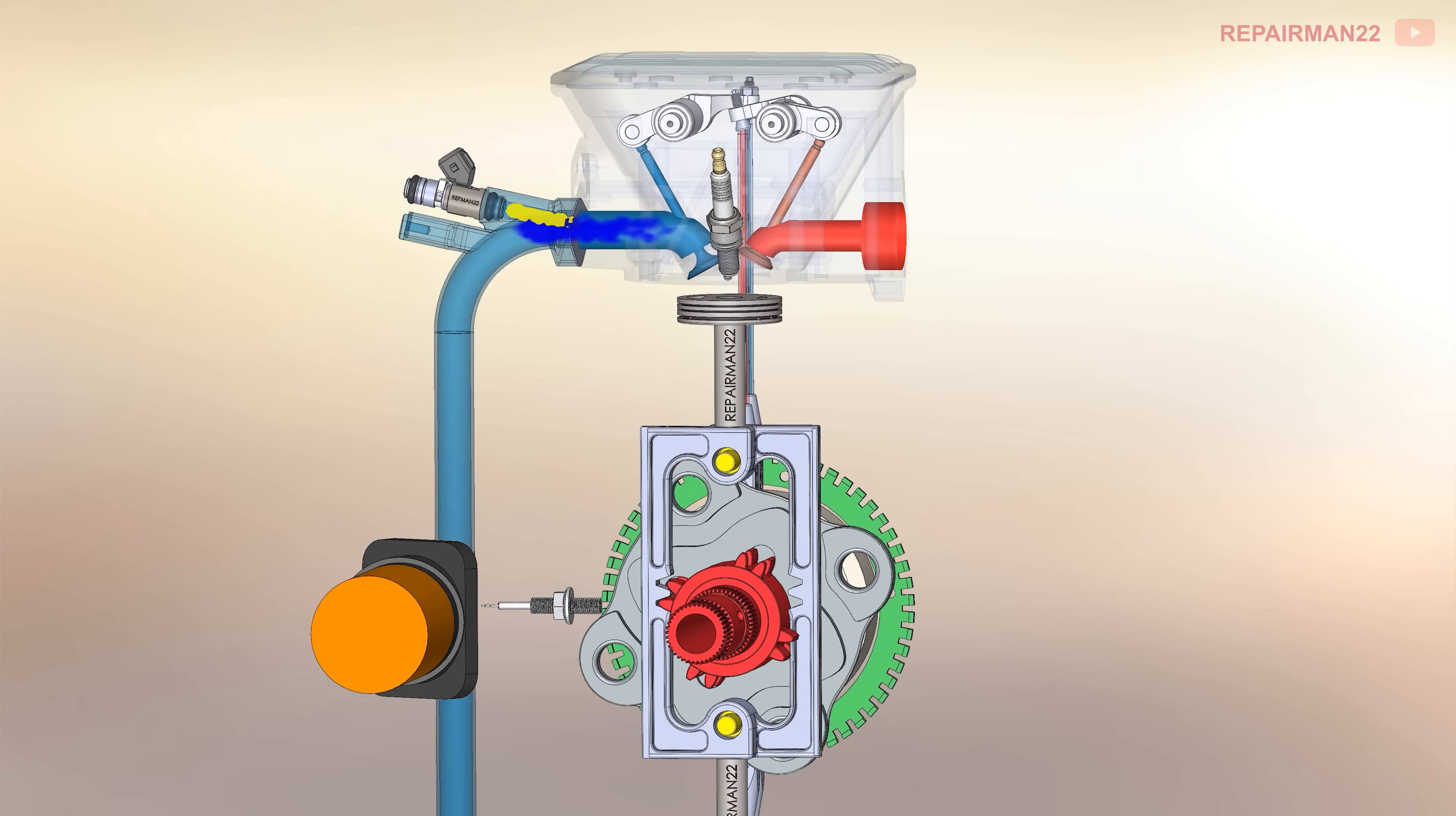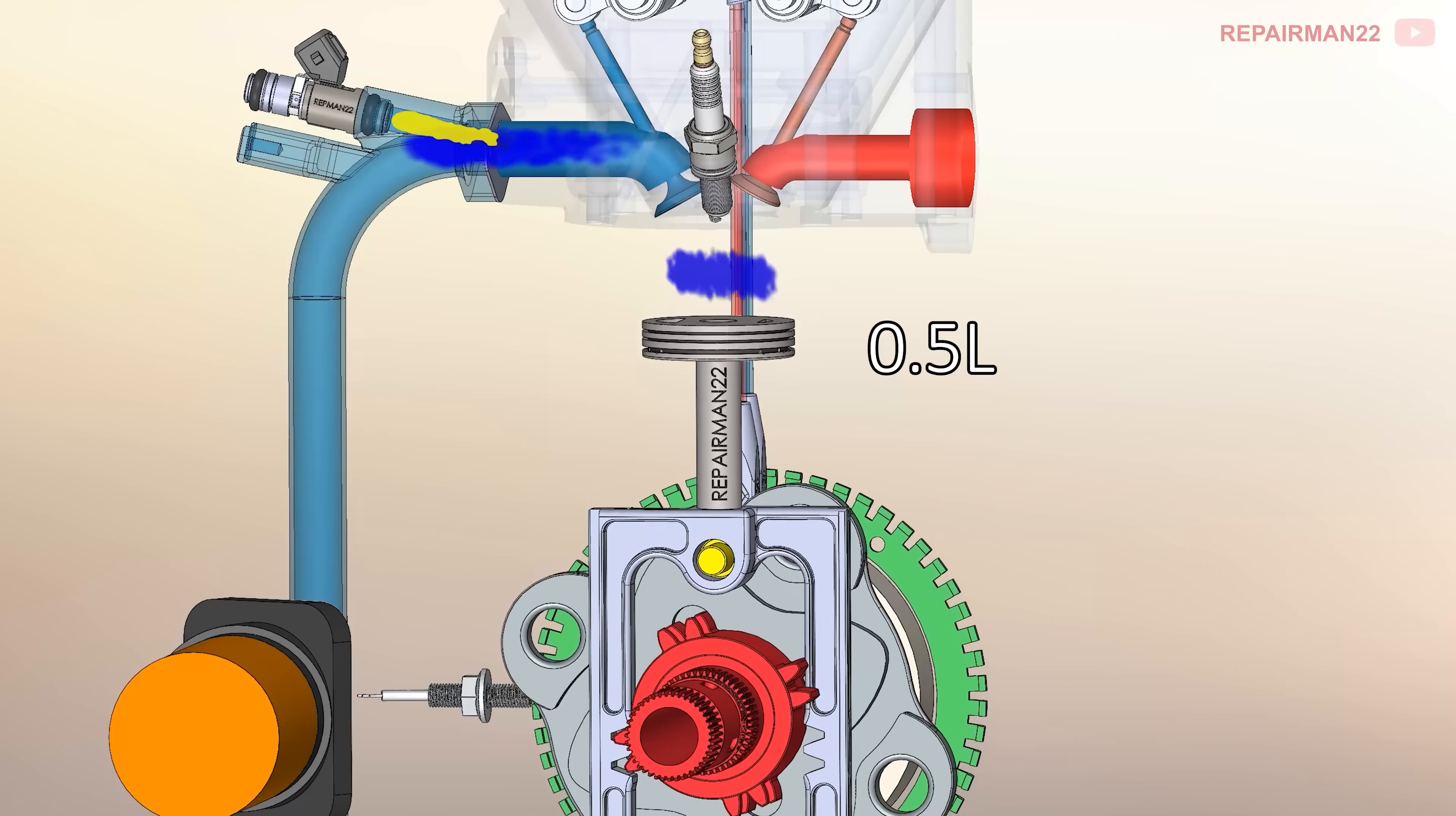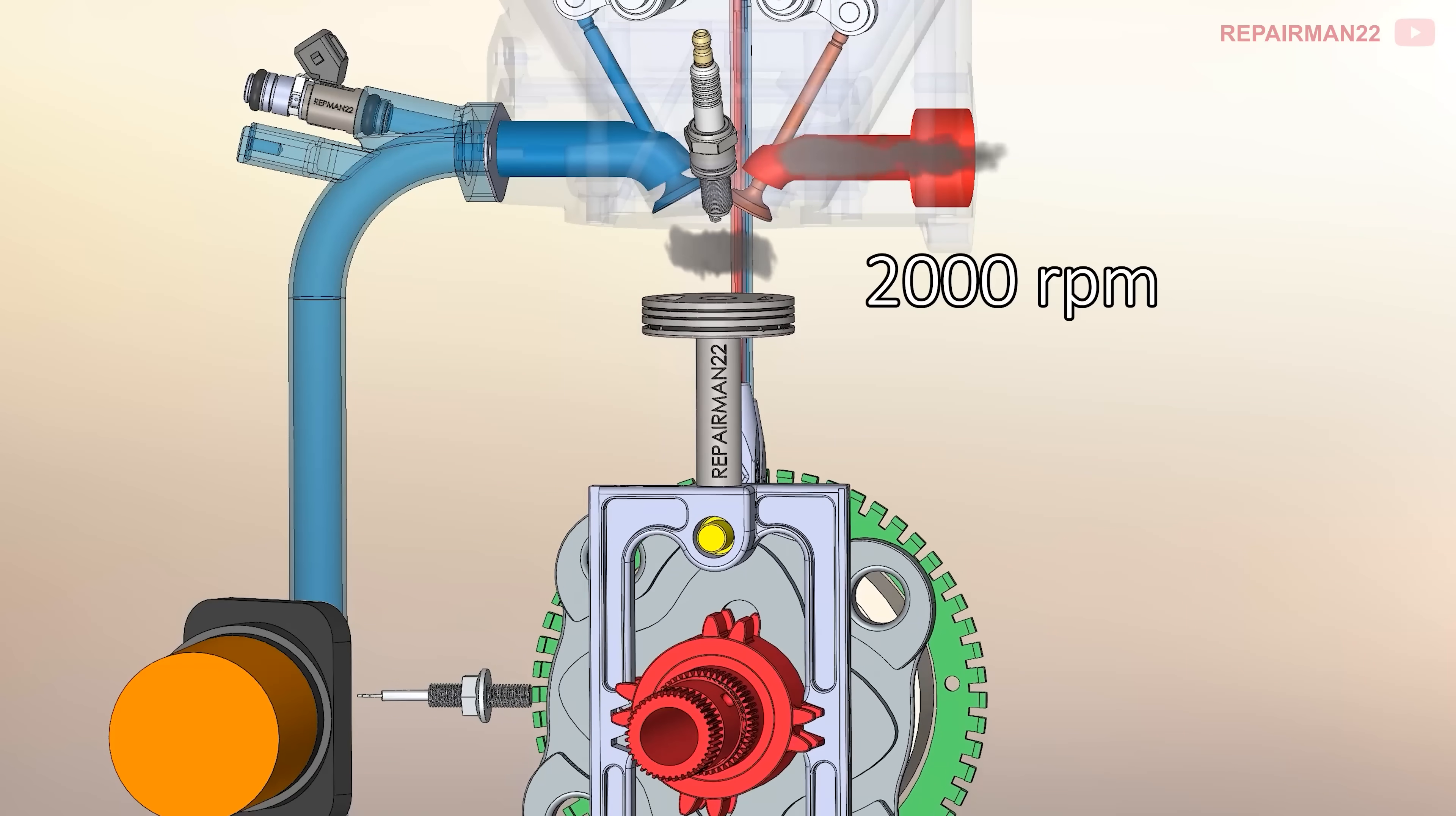Now we see the four-stroke. We have intake, compression, combustion, and exhaust. This engine we're looking at is 0.5L, has a 75mm bore and a 58mm stroke, and is designed to only rev at 2000 RPM maximum.